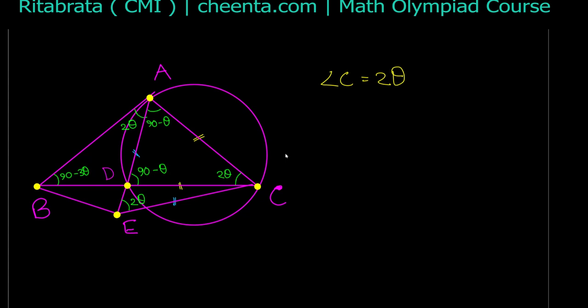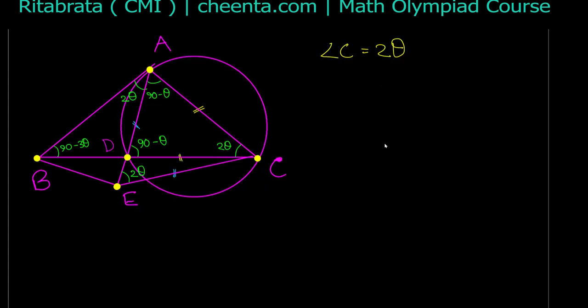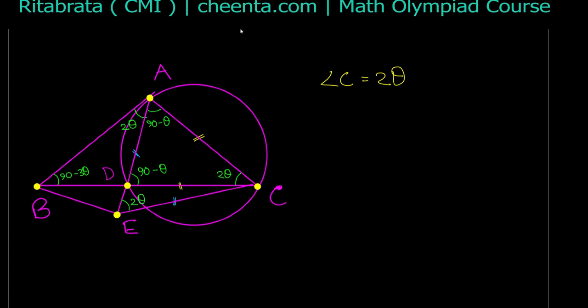Now BE is tangent to the circumcircle, so by the alternate segment theorem, angle ABE equals angle ACD, so both are 2θ. From there we get angles A and C in triangle ABC, and from that we can easily get angle B, which is 90 minus 3θ. We can also find angle AEC to be 2θ. Using all this, we begin the trigonometric part of the problem.